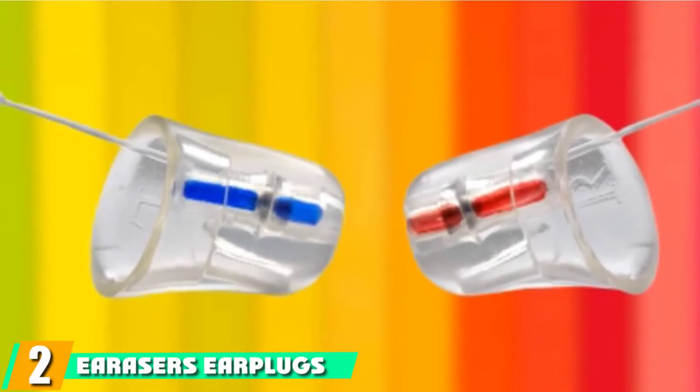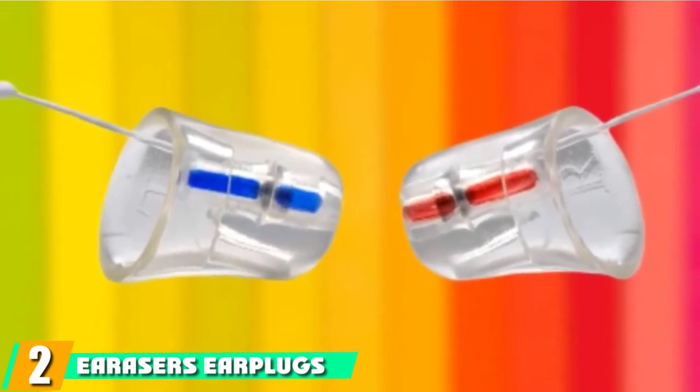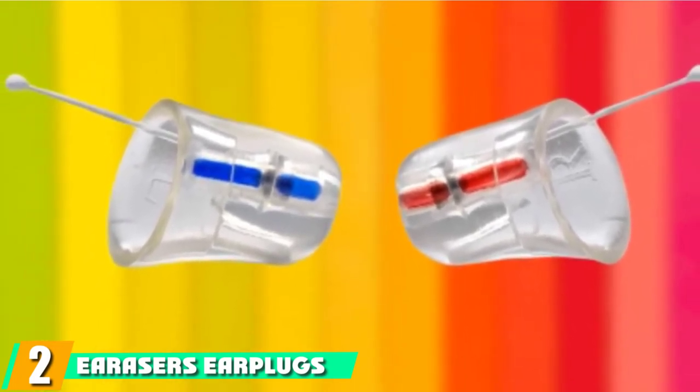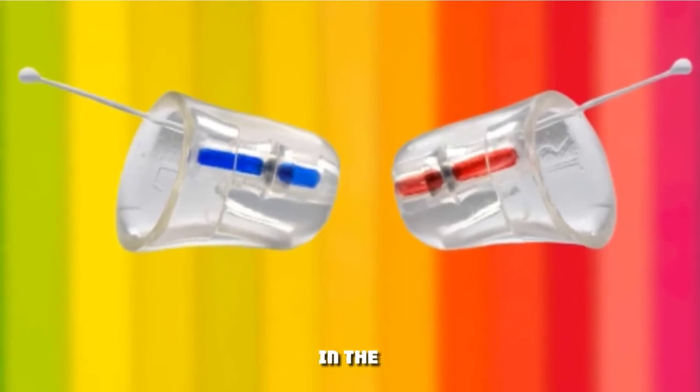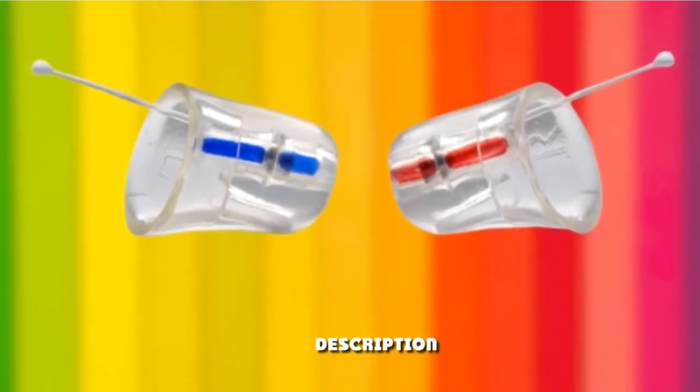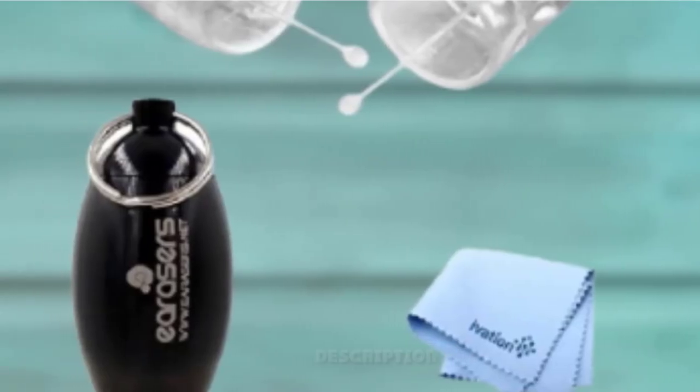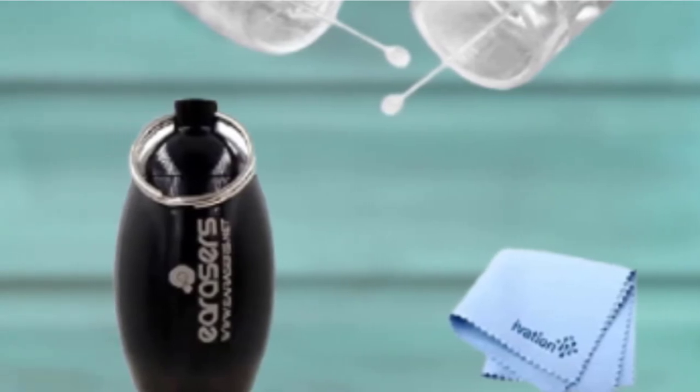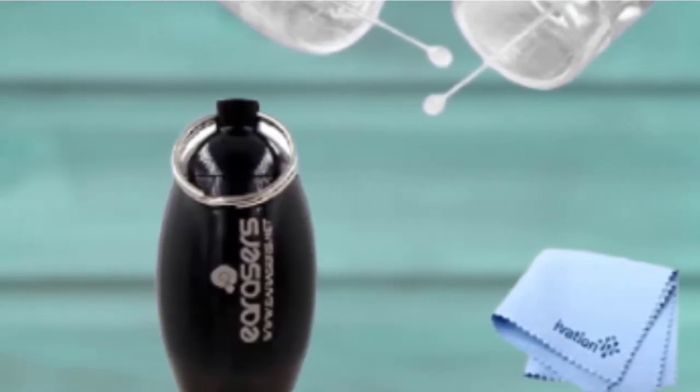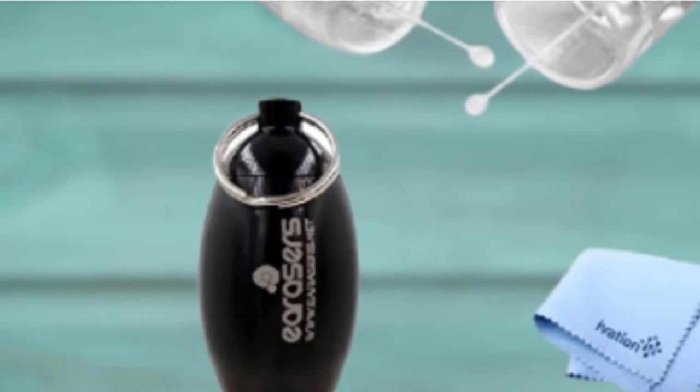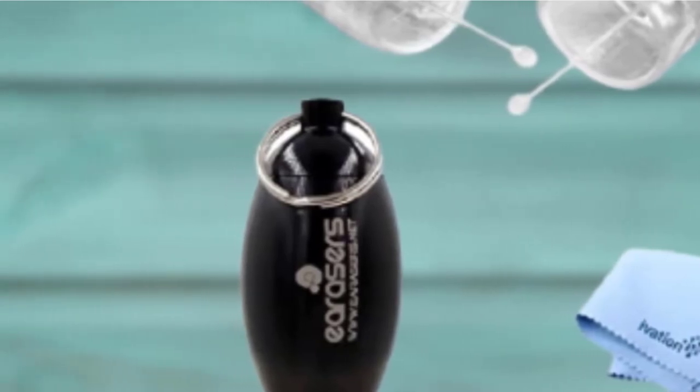Moving on to the next at number 2 with Erasers earplugs. Another set of musician-specific earplugs. The filters are designed to give a flat frequency response that is similar to using studio monitors. This means that you hear the sound accurately, just at a reduced volume, making it easier to keep tabs on your tone and ensure the crowd is getting the sound they deserve.